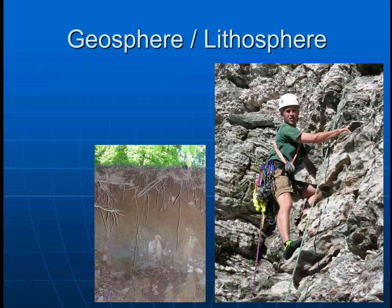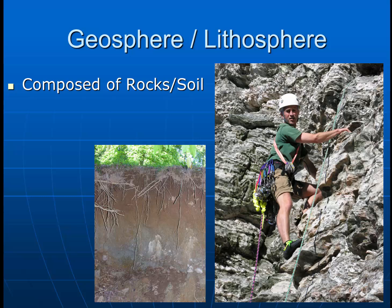The geosphere, sometimes referred to as the lithosphere, is all of the rocks and soil on the planet — the most common materials that make up the hard part of planet Earth. Of the rocks, it's worth noting there are two basic different types of crustal rocks: the continental crust, which is mostly made out of rocks such as granite, and oceanic crust, which is mostly made out of rocks like basalt. But rocks and soil, or sediment, compose most of the geosphere or lithosphere that we can interact with.